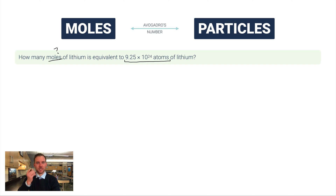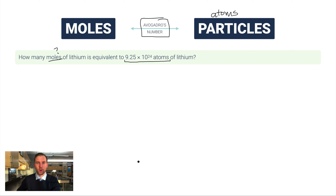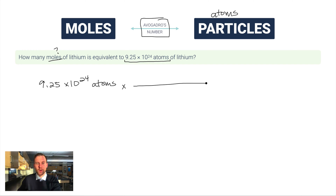Students often have a tough time figuring out where to start. When doing a conversion, start with the information you want to convert. Here we have atoms, which is a type of particle, so I want to start on the particle side and go to the mole side using Avogadro's number as a conversion factor. I'll start with 9.25×10²⁴ — and it's really important to include the unit, atoms — then use a conversion factor. This is called the factor label method or dimensional analysis.